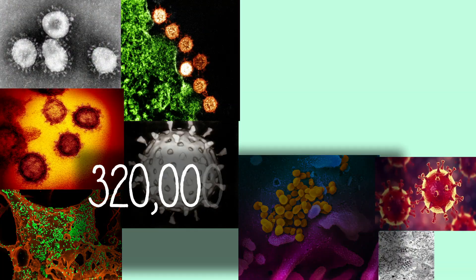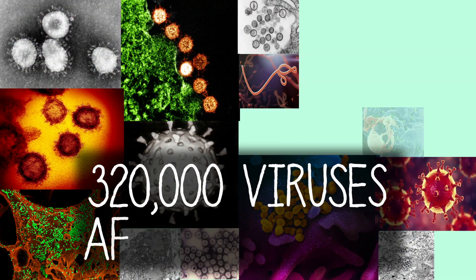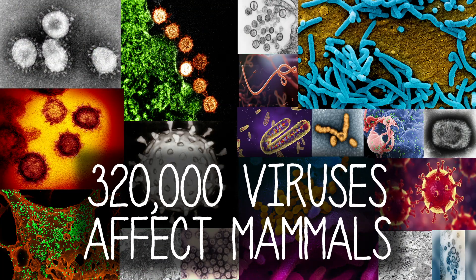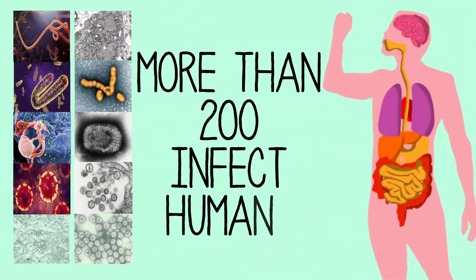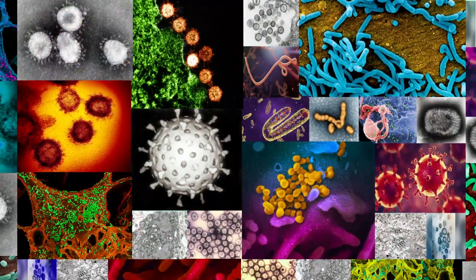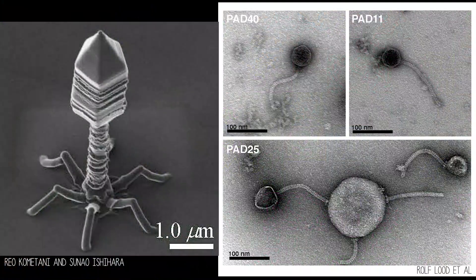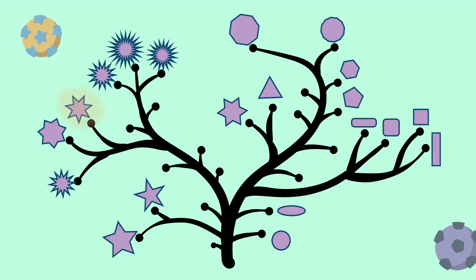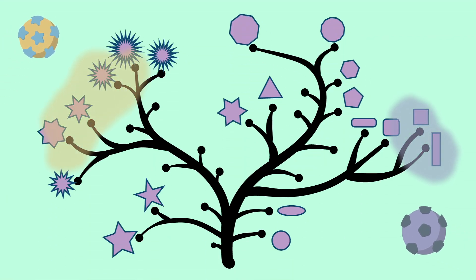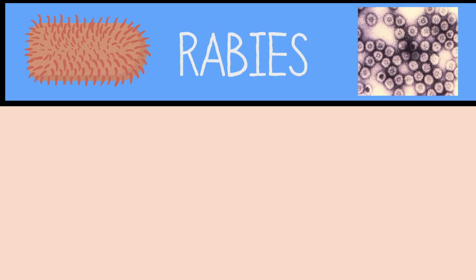There are at least 320,000 different viruses that are known to infect mammals alone, more than 200 of which infect humans. There could be millions of different types out there. There are even viruses that infect bacteria. And each virus has a preferred type of cell to infect. Some aren't very picky — they'll happily hijack cells from a range of different animals, like the rabies virus.